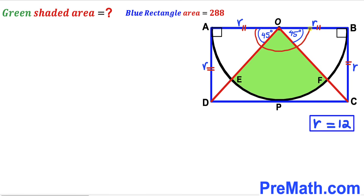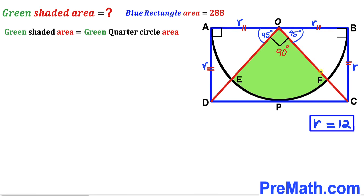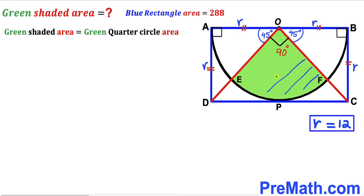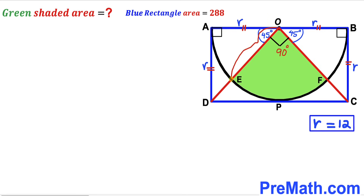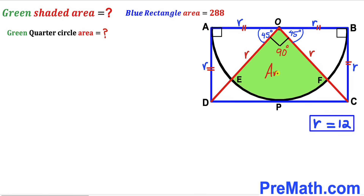This whole straight angle is 180 degrees. We know one angle is 45 degrees and another is 45 degrees, so the remaining angle must be 90 degrees. Therefore, the green shaded area equals the area of a green quarter circle. We can see that EO and OF are both radii of this quarter circle, labeled lowercase r.